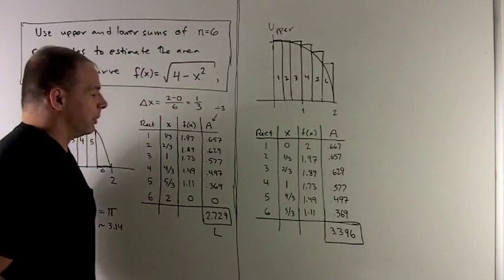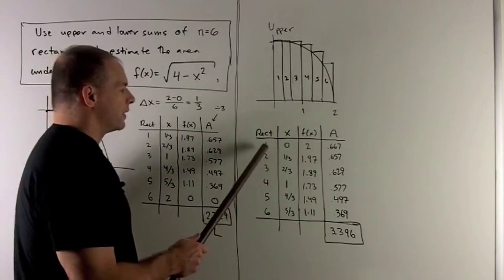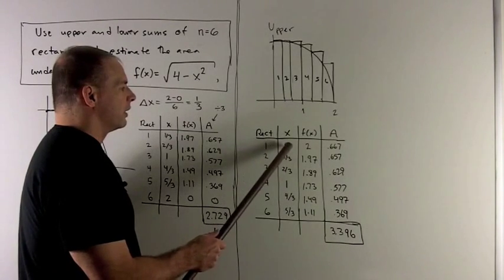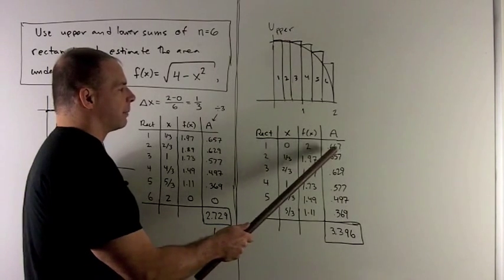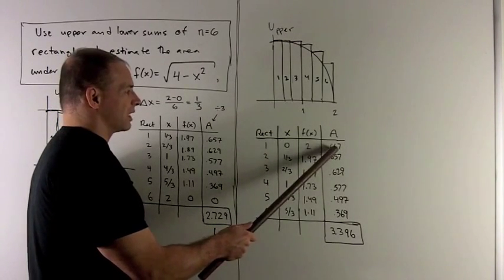Not a lot of work to do here, because if you notice, if I start at the first rectangle, the left end point is 0. Calculating what that gives me, it gives me a 2. We divide that by 3, I get 0.667.